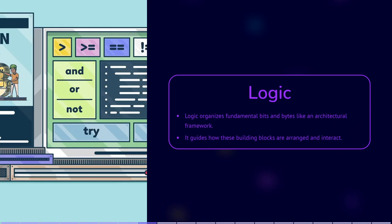Logic. What do we mean by logic? If bits and bytes are building blocks, logic can represent how we arrange those blocks. Logic serves as the architectural framework that organizes the fundamental building blocks of computing — the bits and the bytes. It's the blueprint that tells bits and bytes what is going to happen.